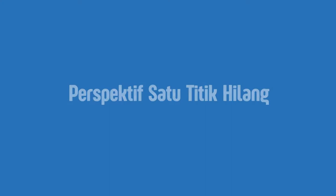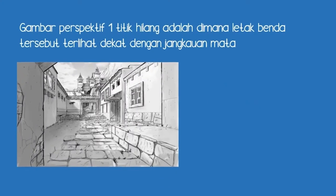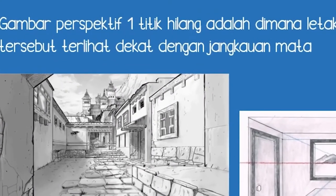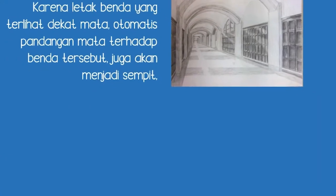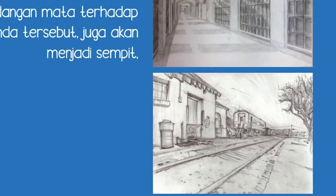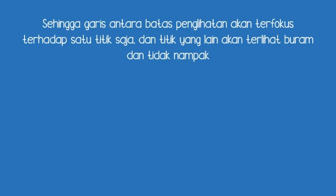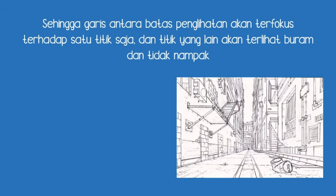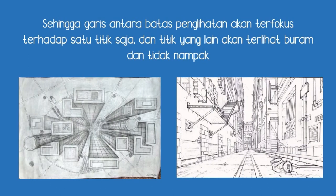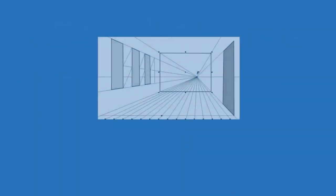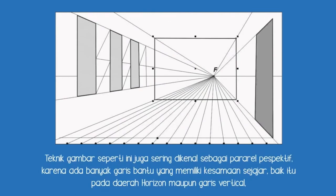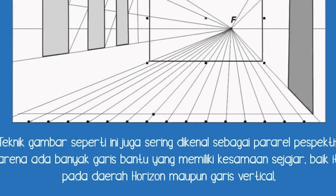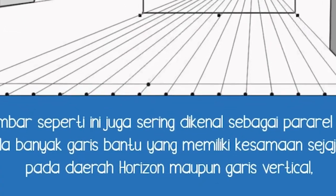Perspektif satu titik hilang. Gambar perspektif satu titik hilang adalah di mana letak benda tersebut terlihat dekat dengan jangkauan mata. Karena letak benda yang terlihat dekat mata, otomatis pandangan mata terhadap benda tersebut juga akan menjadi sempit. Sehingga garis antara batas penglihatan akan terfokus terhadap satu titik saja, dan titik yang lain akan terlihat buram dan tidak nampak. Teknik gambar seperti ini juga sering dikenal sebagai paralel perspektif, karena ada banyak garis bantu yang memiliki kesamaan sejajar, baik itu pada daerah horizon maupun garis vertikal.